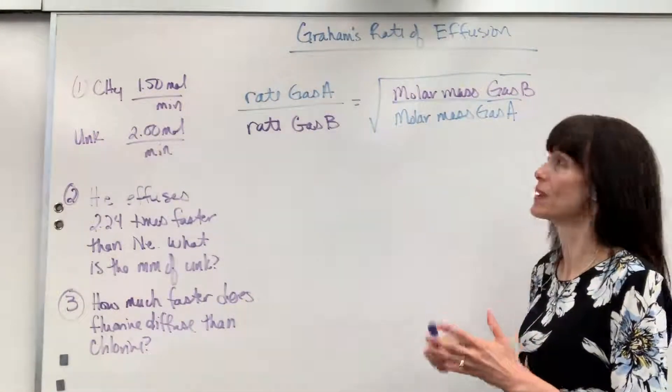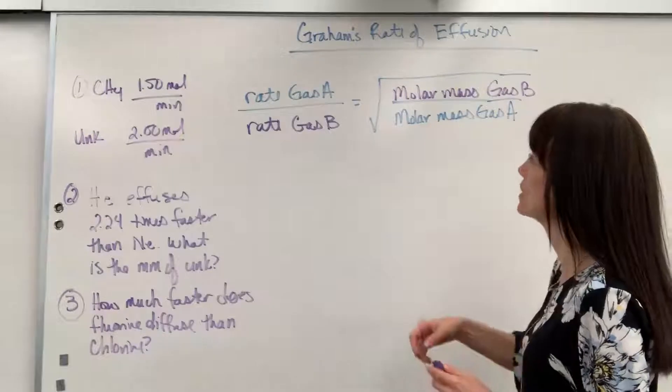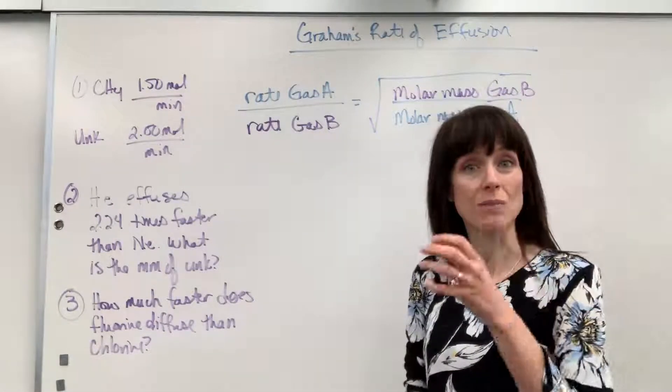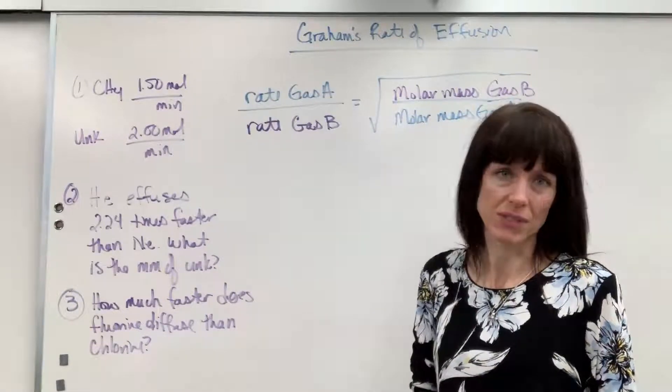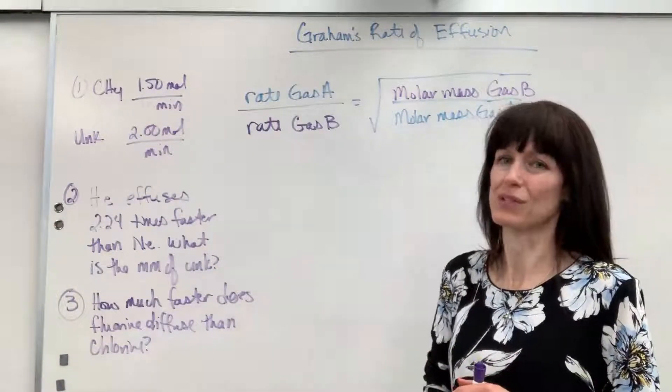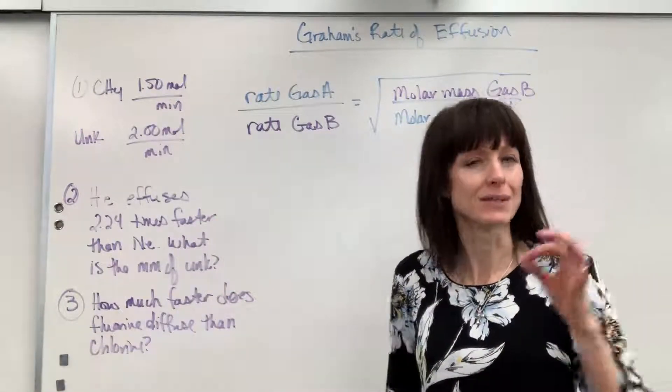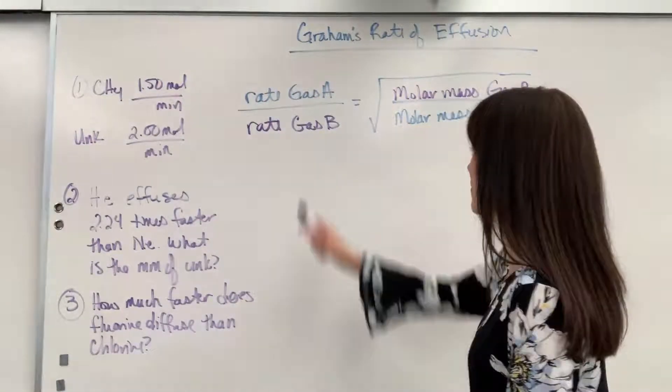So, here is the formula, Graham's rate of effusion. Remember, effusion is going to be how quickly a gas moves through a small hole. You can also use this for diffusion. Diffusion is just how fast a gas moves and fills any space, not necessarily moving through a small hole.